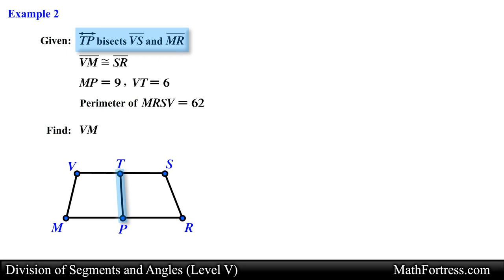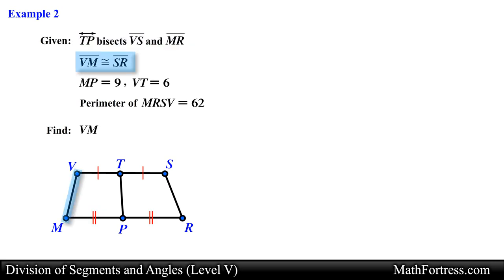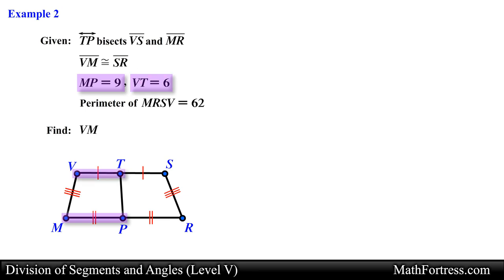We will start solving this problem by marking the diagram with all the given information. We know that line TP bisects segment VS and segment MR, so we draw single tick marks on segment VT and segment TS, and double tick marks on segment MP and segment PR, since these two pairs of segments are congruent. In addition, segment VM is congruent to segment SR, so we use triple tick marks to illustrate this. Next we label the measurement of segment MP as 9 and segment VT as 6.